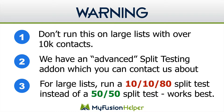Honestly, it's one of the best ways of doing A-B split testing. You can still use this feature even if you have a larger size list, just by running a 10-10-80 split. All you would do is start with a 20% subset of your list, run a split test on that, pick the winner, and then send the 80% of your list to the winner. That's another approach you can use.